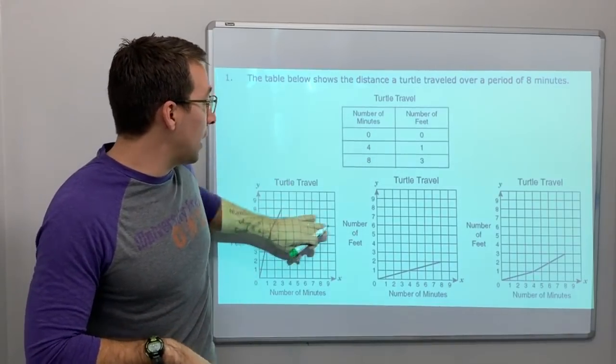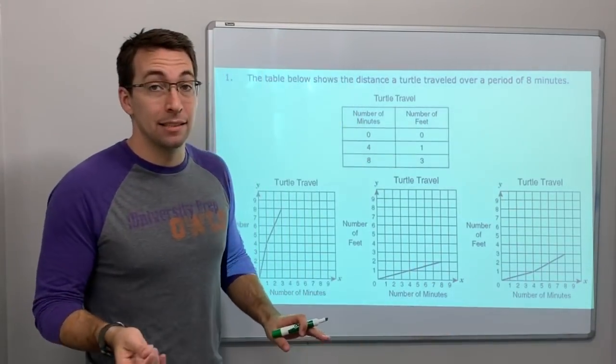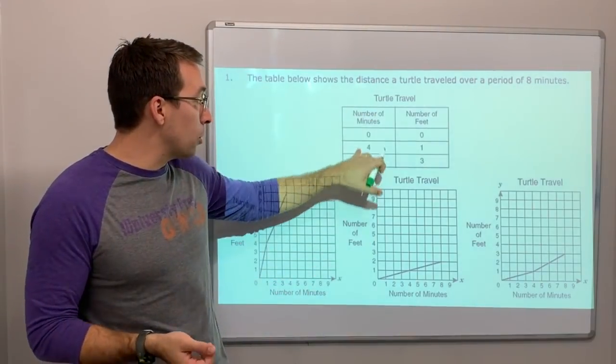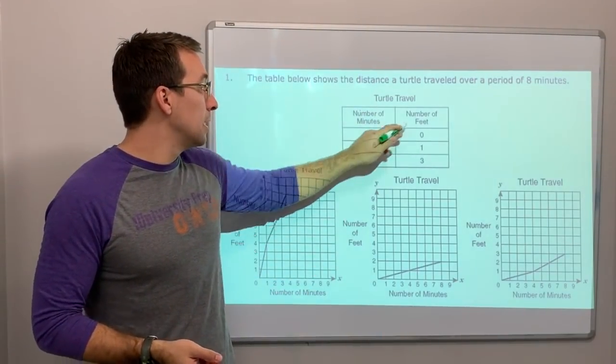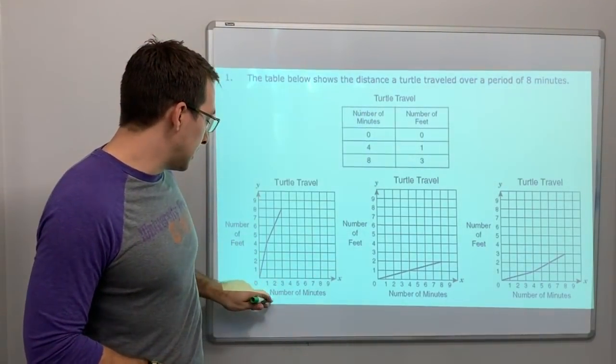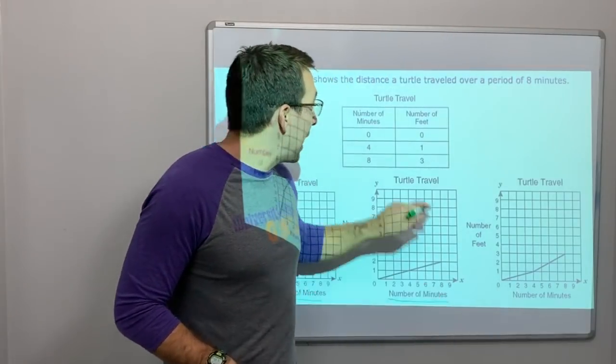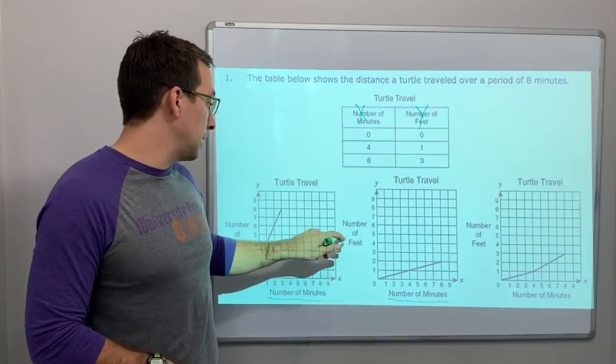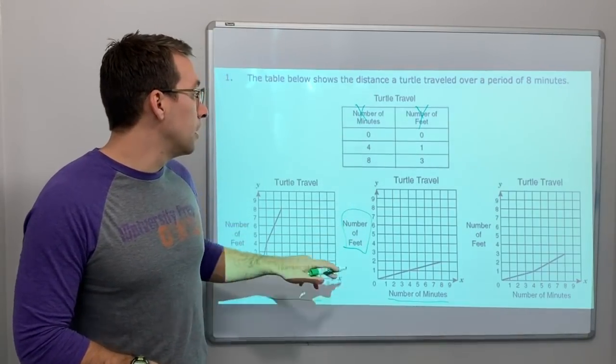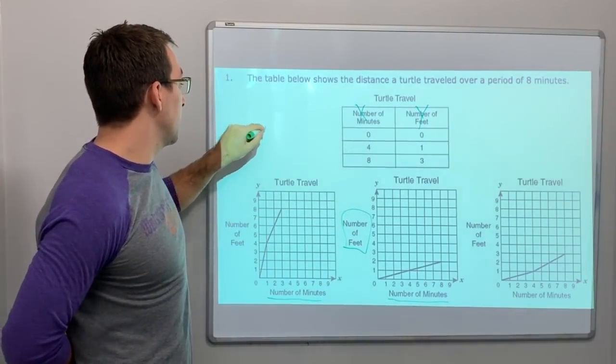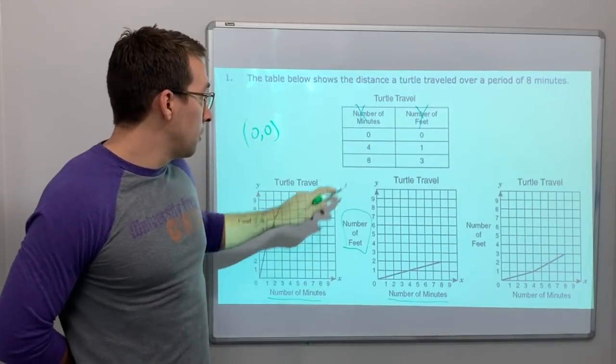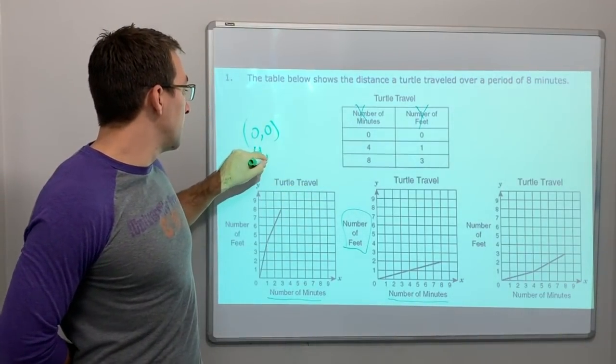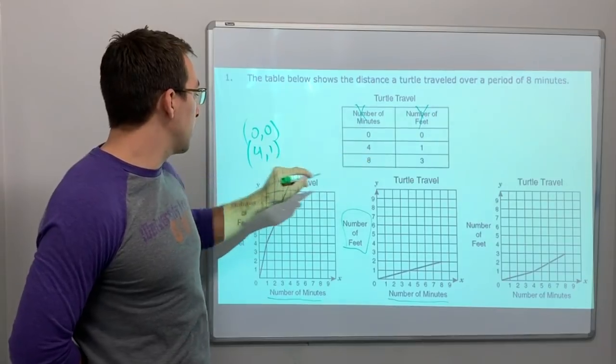Now we have to find out which graph matches the points. Here's our number of minutes, here's our number of feet. Look at this - this is your x value and your y value. Number of feet right here, your y. So zero zero, four one, and then eight three.